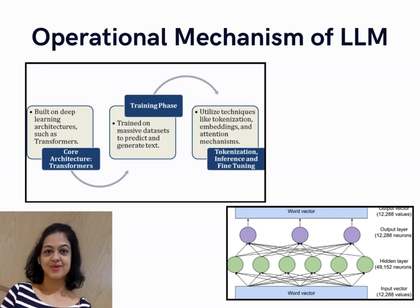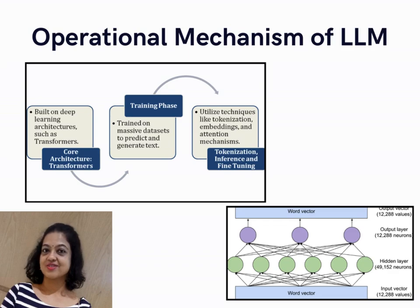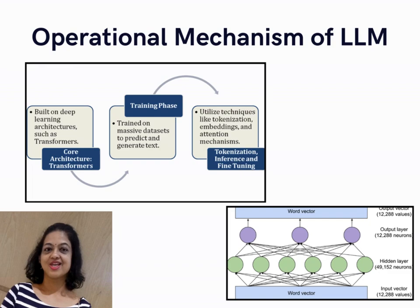The second diagram represents a basic neural network architecture used for processing word vectors. The Input Vector (Word Vector) layer represents the input to the model. The input word is transformed into a numerical representation — a word vector — often derived from techniques like Word2Vec, GloVe, or embeddings from transformer models. In this diagram, the input vector has 12,288 values, which corresponds to the size of the embedding space or input dimension.